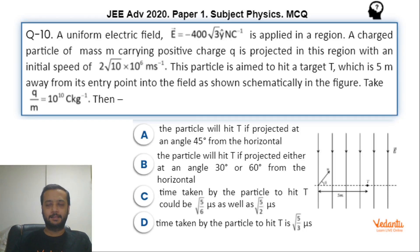Hi dear students, let's see this question that was asked in JEE Advanced Paper 1 2020 from the topic electrostatics. This was a multiple choice question, so even if you don't solve this question completely you might end up getting partial marks.